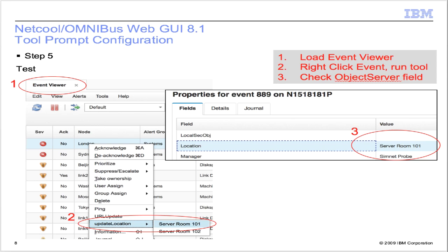After adding the tool to the menus, we can test the tool. Load an event viewer and right-click an event to bring out the tools. Since it is a fixed prompt tool, it will display the list of options from the prompt tool itself. To add more options, simply modify the prompt to include more. Run the tool. Double-click the event to load the event information and check the object server field.